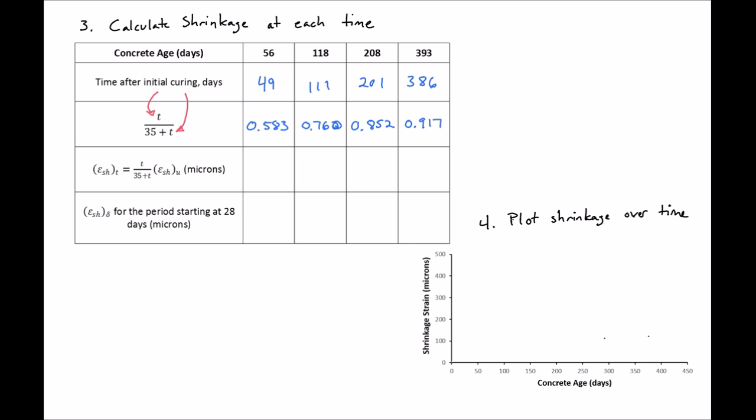You can see that we'll use this factor right in here and multiply it times our ultimate shrinkage that we found before to find our shrinkage at each time. So we'll have 256, 334, 374, and 403.